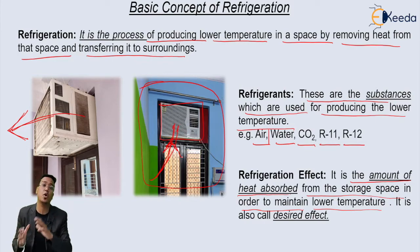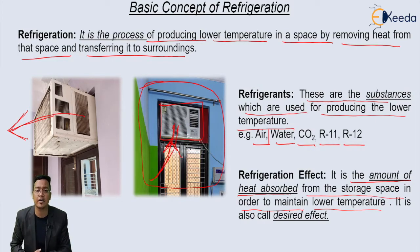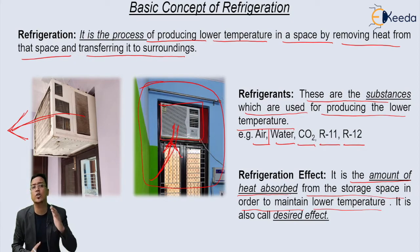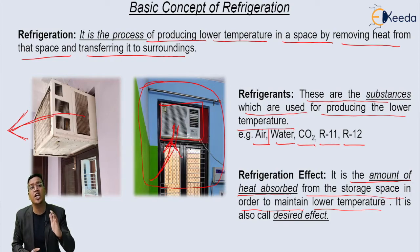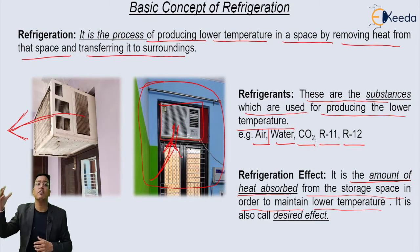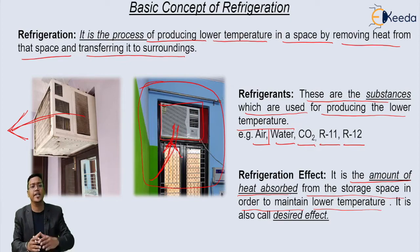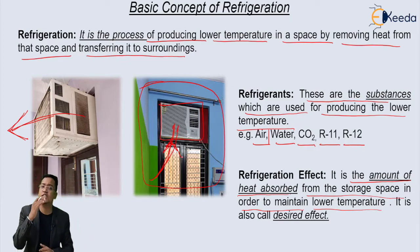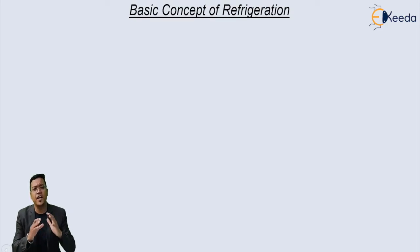In this example, how much quantity of heat is absorbed by the window AC is called the refrigeration effect. This is also called the desired effect. The amount of heat absorbed by the window AC and transferred to the surrounding — that is the refrigeration effect.